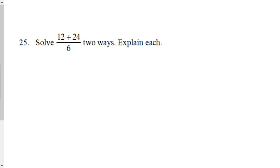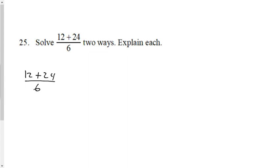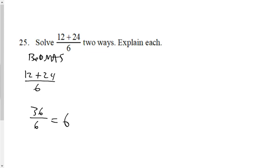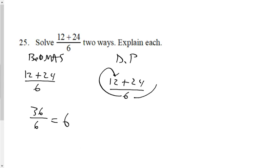Question 25: same idea but with division of a binomial. First method: solve with BEDMAS — 12 plus 24 equals 36, then 36 divided by 6 equals 6. Second method: distributive property — write 12 over 6 plus 24 over 6, which is 2 plus 4, also equals 6. Both methods confirm the same answer.